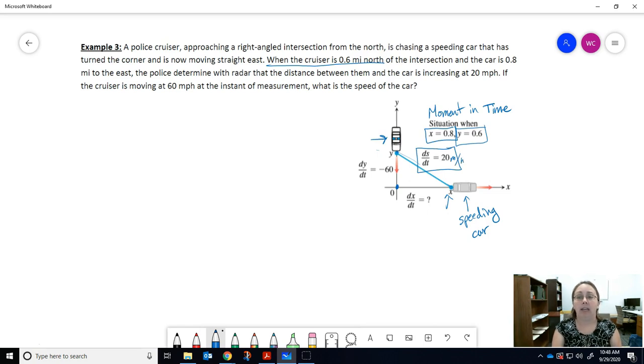If the cruiser is moving at 60 miles per hour, this is a rate of change, this is the rate of change of the distance y for the police car with respect to time. They're giving you that information at the particular instant of measurement.